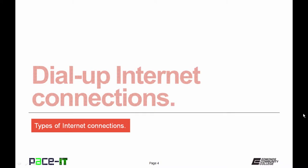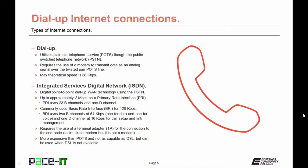We're going to begin by talking about dial-up internet connections. Dial-up utilizes plain old telephone service, POTS service, through the public switched telephone network, the PSTN. Dial-up requires the use of a modem to transmit data as an analog signal over the twisted pair plain old telephone service lines. Your max theoretical speed in the United States using dial-up is 56 kilobits per second.